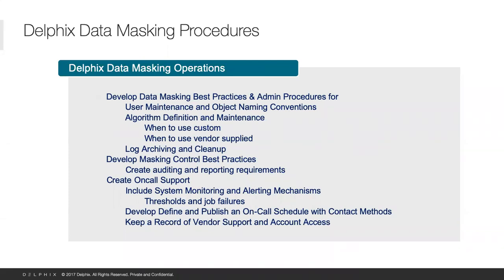Masking is very similar. Best practices, admin procedures for user maintenance and object naming conventions. Algorithm definition maintenance: when to use custom, when to use vendor-supplied algorithms. Get operational policies and procedures built out. Log archiving and cleanup is very important — even within Delphix. I've been in operations and gotten system halts because archive logs and file systems filled up with log files; figure out how to get those cleaned up. Develop masking control best practices, auditing and reporting requirements. On-call support for masking: threshold for job failures, if jobs are running too long, get communication out on who to call. And again, Delphix support should be available.